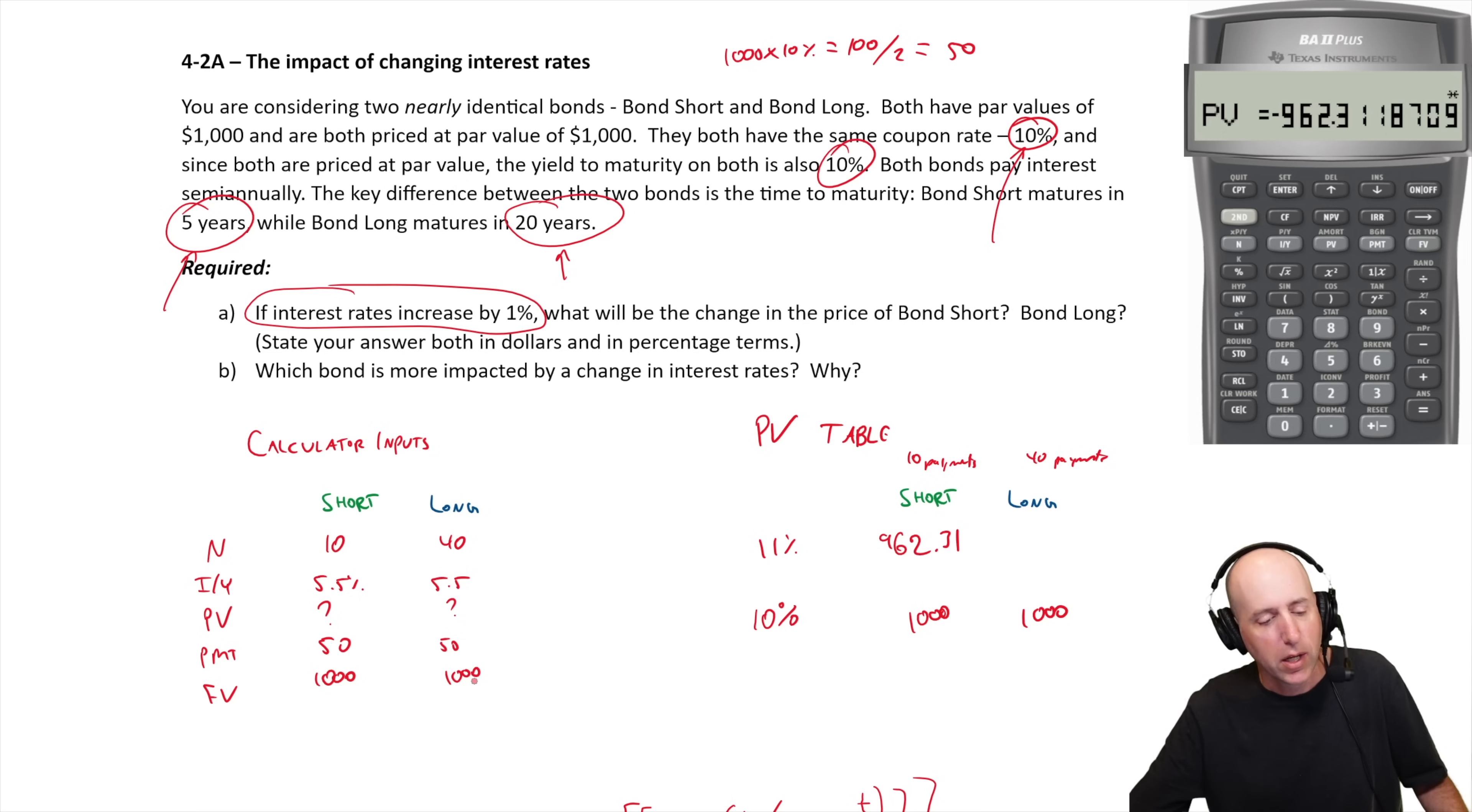The only thing that changes here is the N. I think I can just put in 40 and everything else stayed the same, so I don't have to mess with any of the other inputs here. Now I just compute PV and I get 919.77.